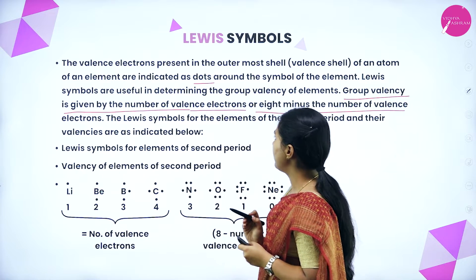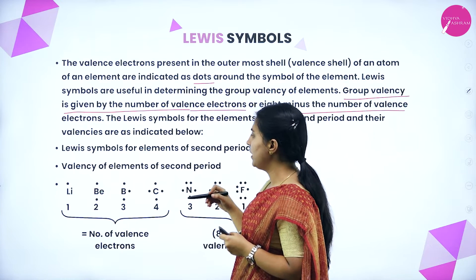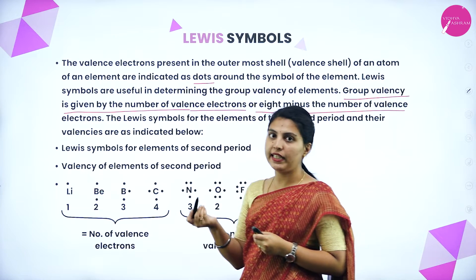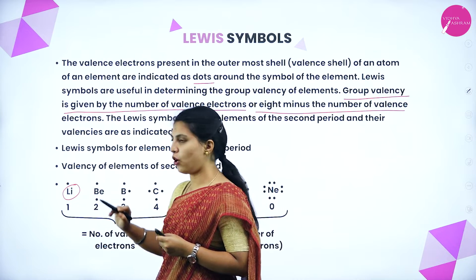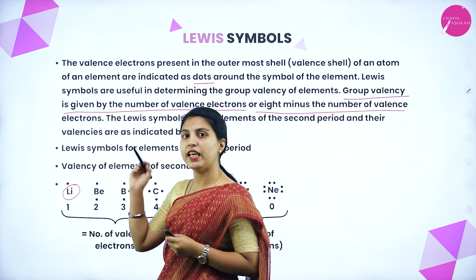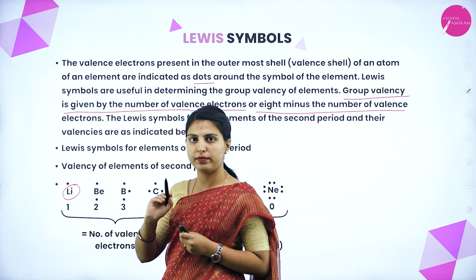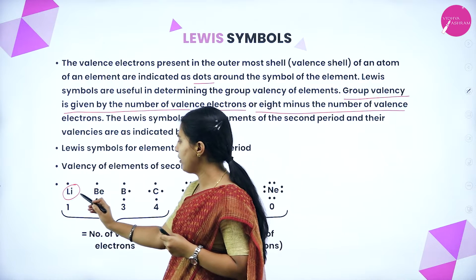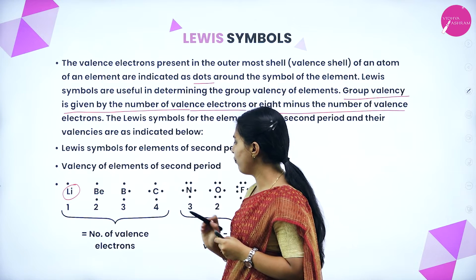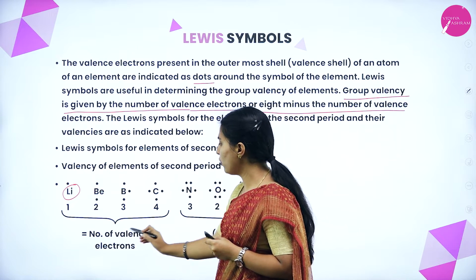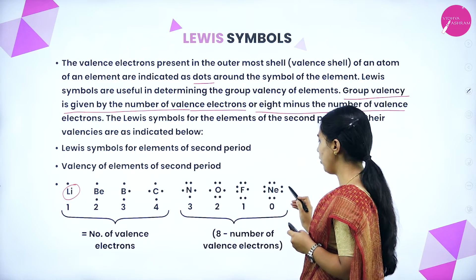The Lewis symbols of elements of the second period and their valencies are indicated. In Lewis symbols, the dot represents the valence electrons of the element. Lithium has 1 valency, beryllium 2, boron 3, carbon 4 — equal to the number of valence electrons. For nitrogen, oxygen, fluorine, and neon, we use 8 minus the number of valence electrons: 8 minus 5 equals 3, 8 minus 6 equals 2, 8 minus 7 equals 1, 8 minus 8 equals 0.